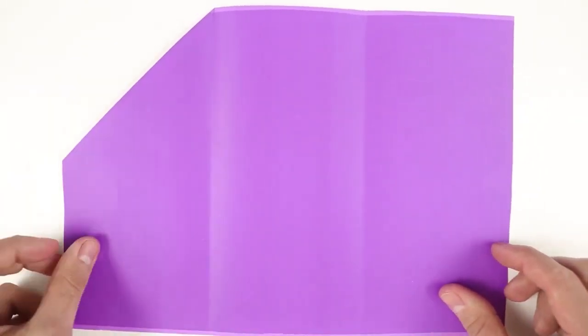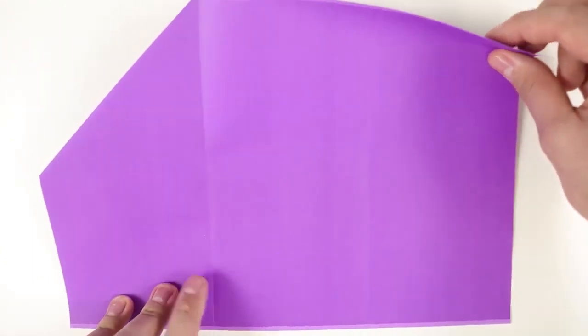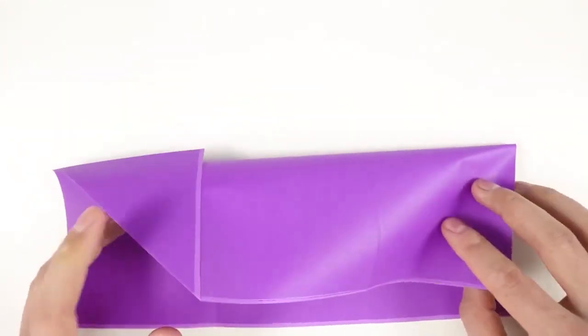Now, using the edge of the last fold, fold a new horizontal crease on this side, bringing the paper down, just like that.